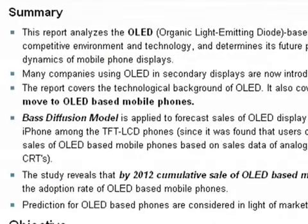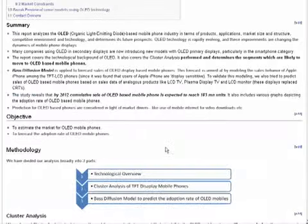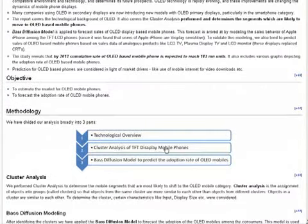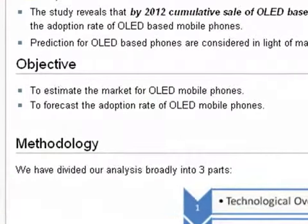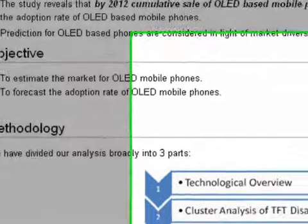We also apply the Bass Diffusion Model to forecast sales of OLED display-based mobile phones. The two-fold objective with which we set out doing this research were: 1. To estimate the market potential for OLED mobile phones. 2. To forecast the adoption rate of OLED mobile phones.